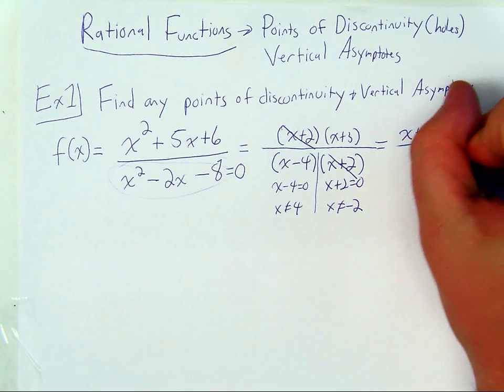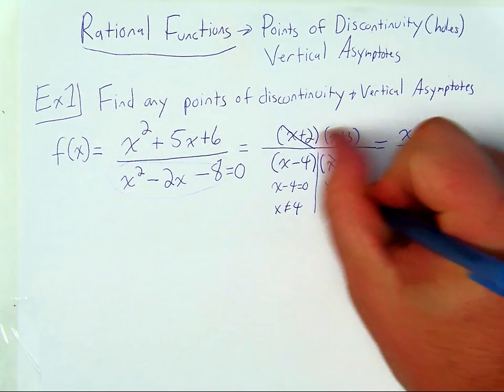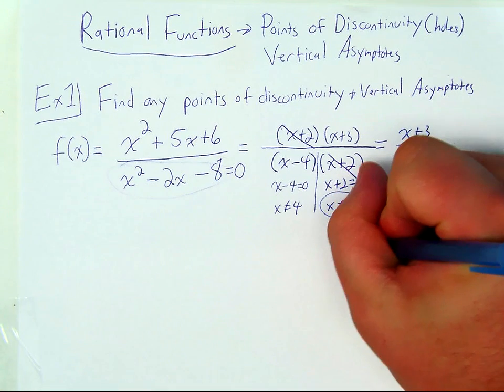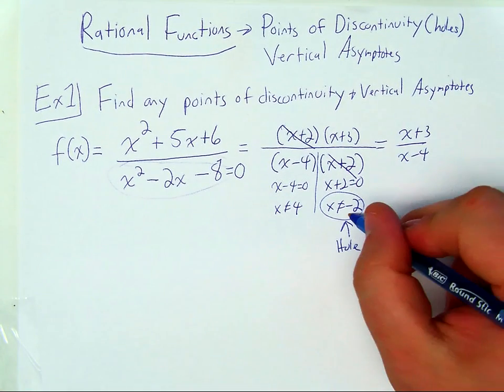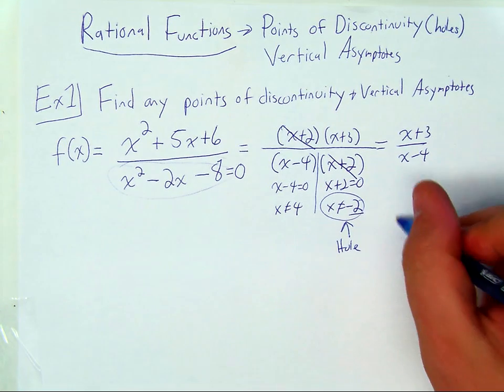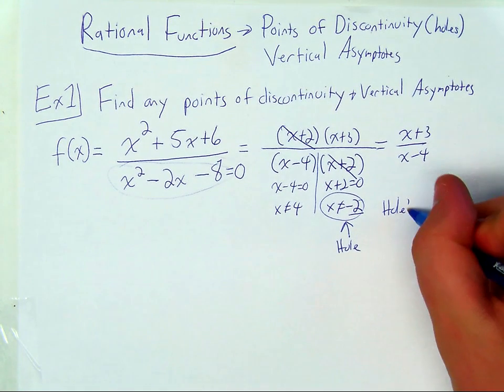So the domain restriction that came from negative two is going to become a hole in our graph, a point of discontinuity. That's the x-coordinate of our hole. For our hole, the x-coordinate is negative two.